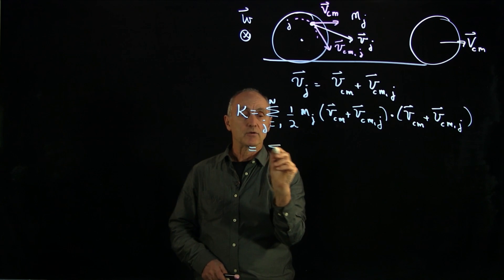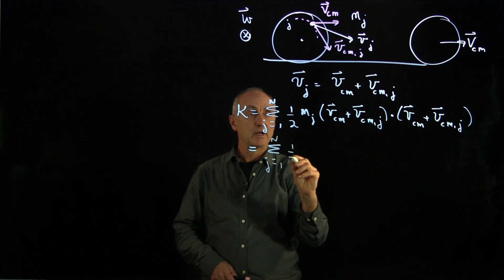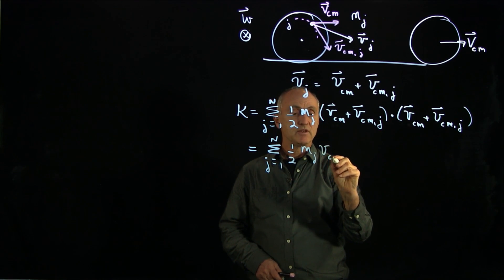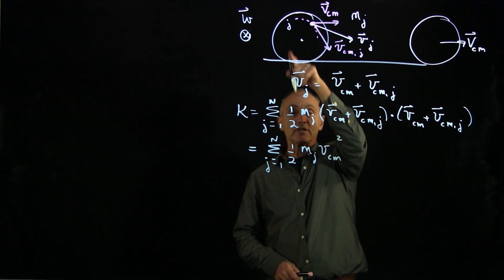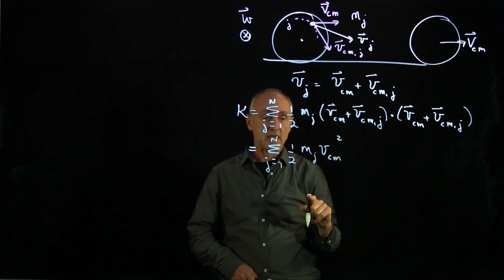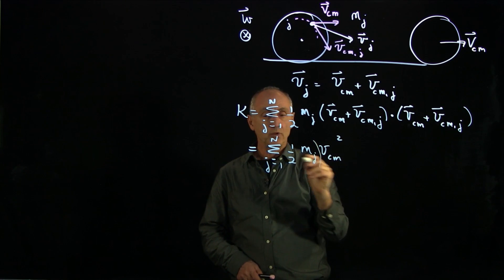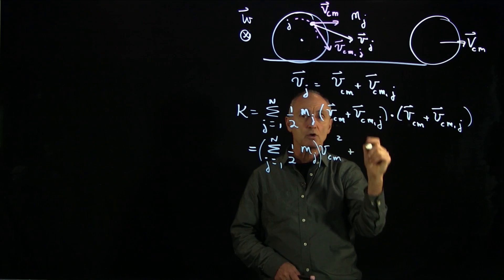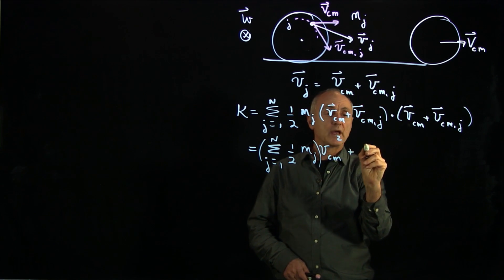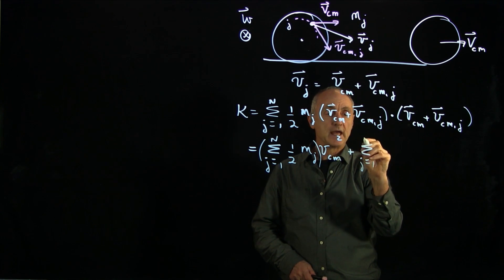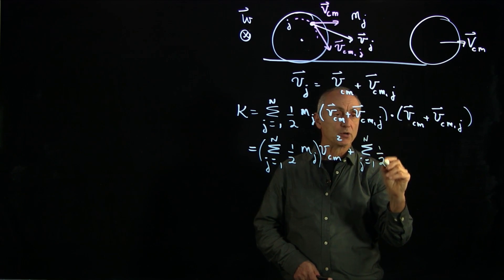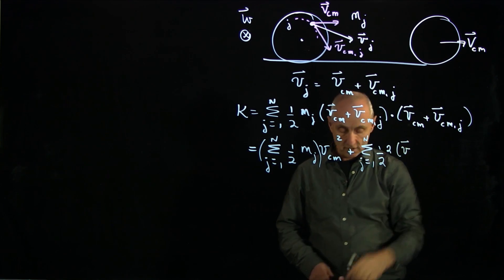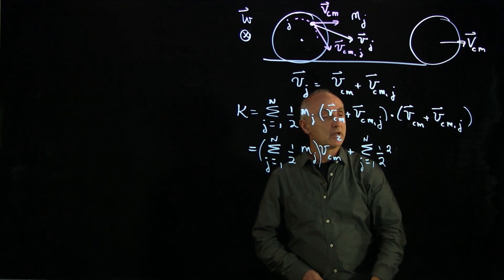So let's write out those three terms. We have 1/2 mj, vcm dot vcm is vcm squared. Now, every point in the object has the same vcm. So we can pull that one out of the sum. And now we have, we'll take these cross terms. So we have the sum over j from 1 to n. There's two cross terms. So the 2's are going to cancel. And inside here, we have to remember to keep our mass element. That's important.